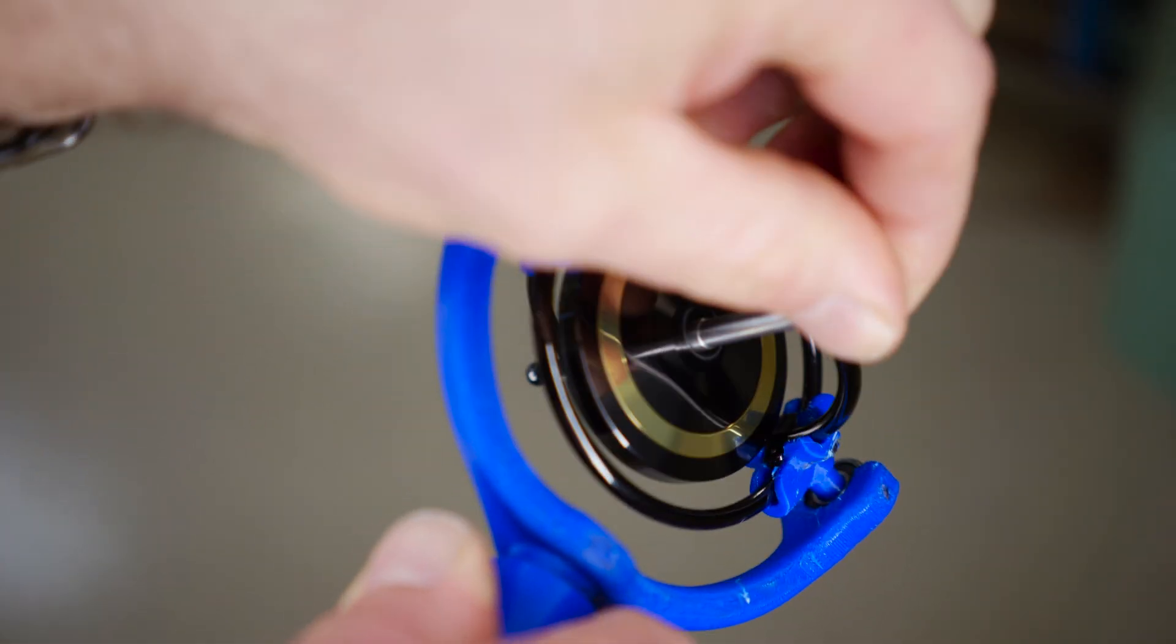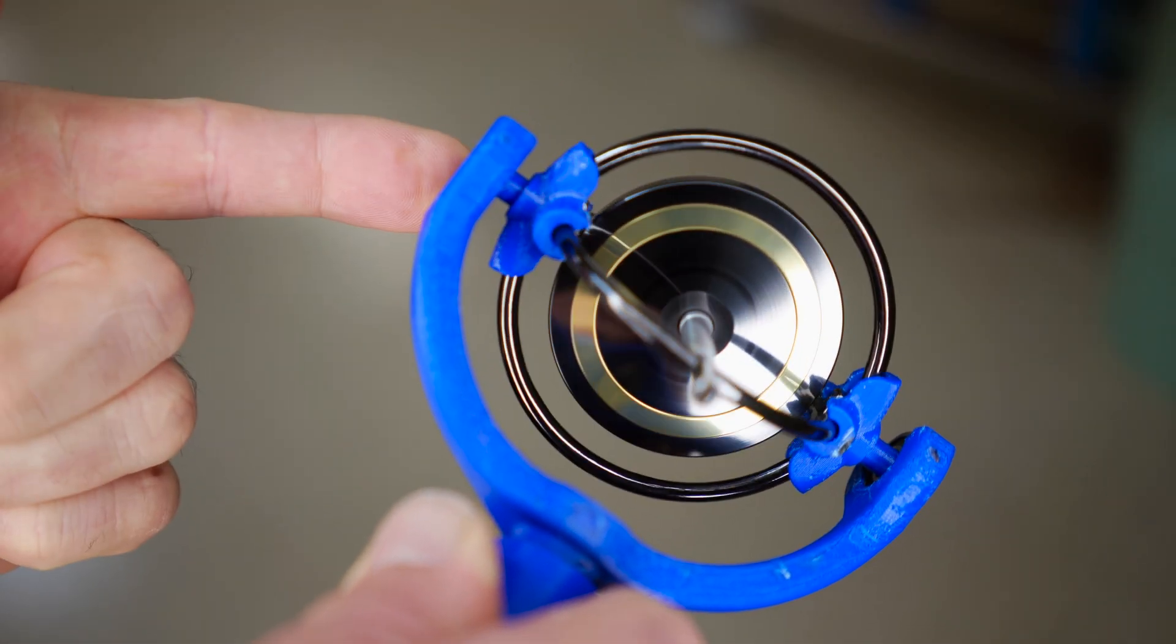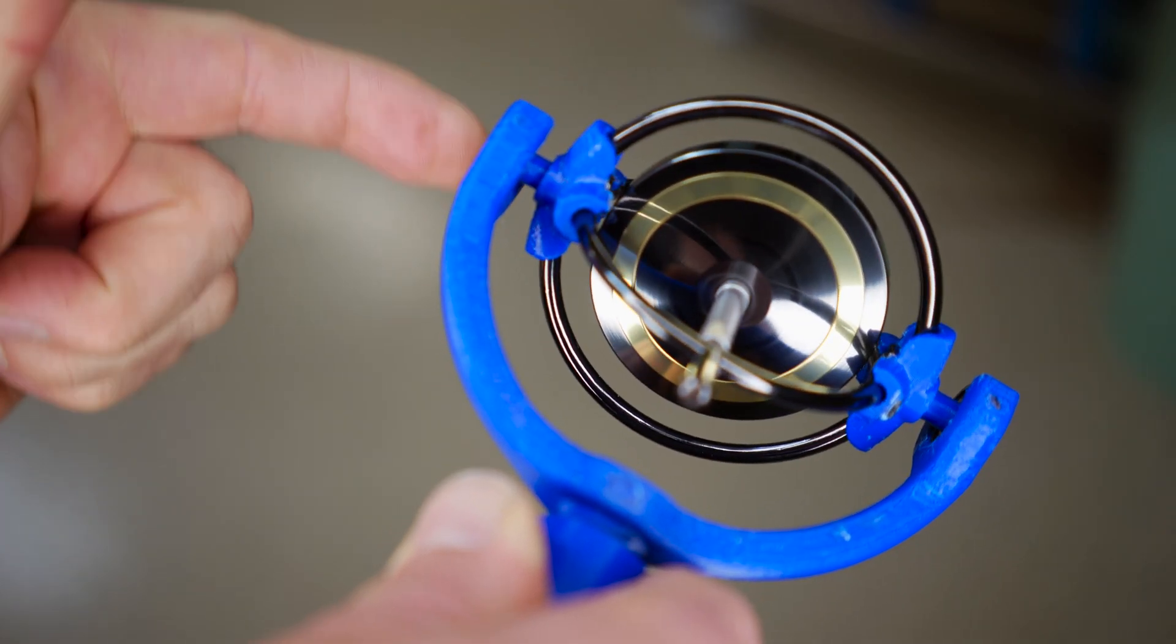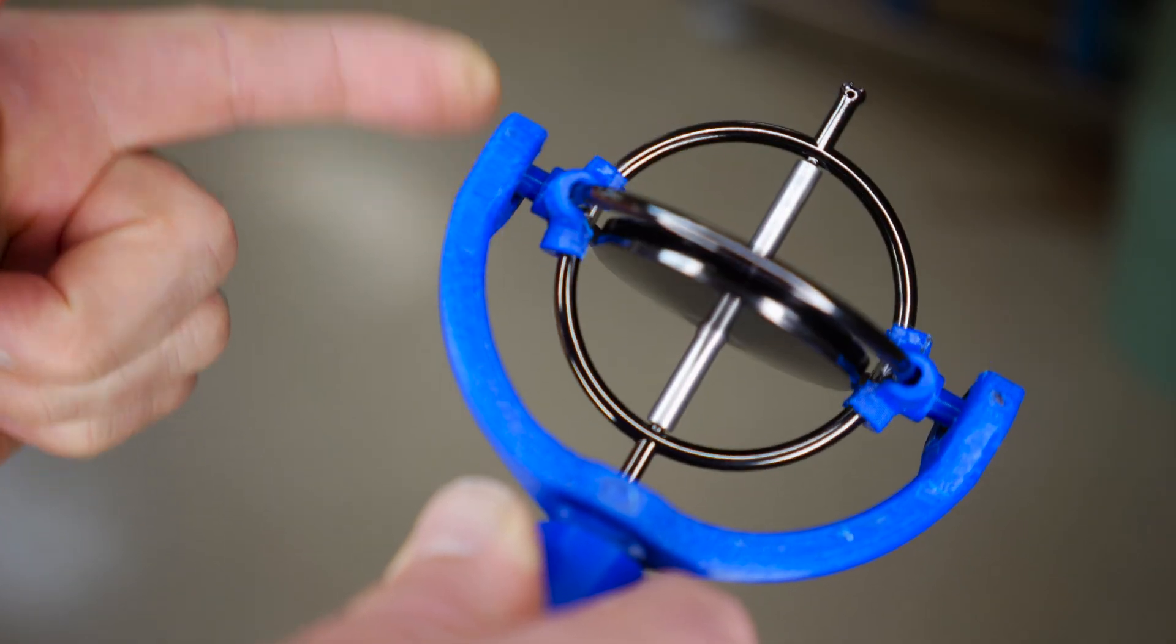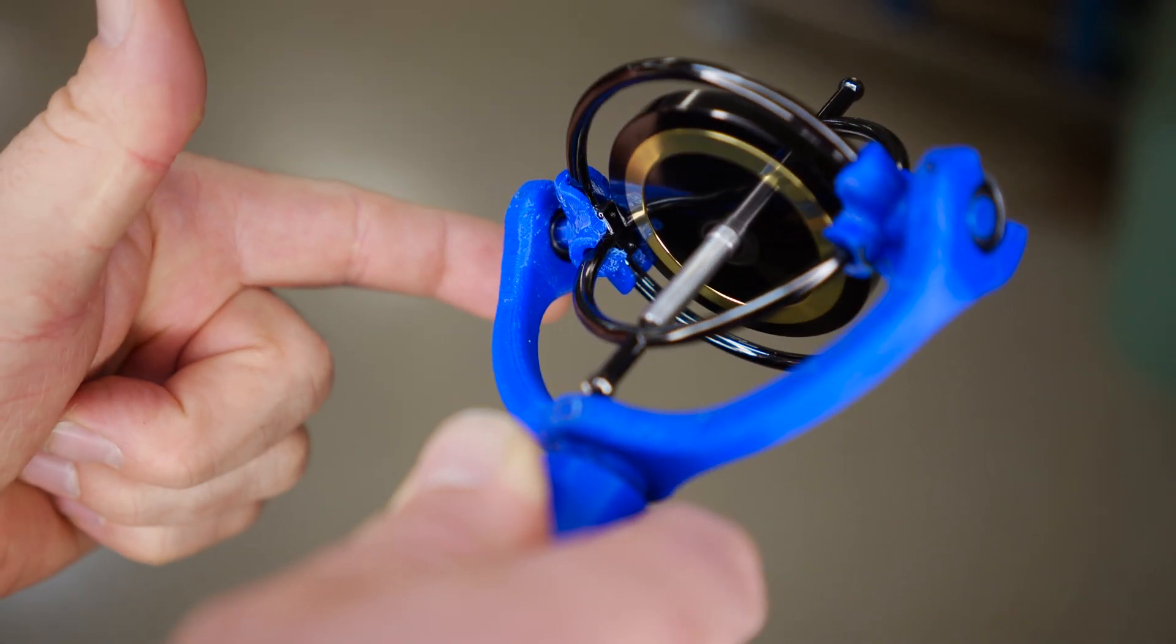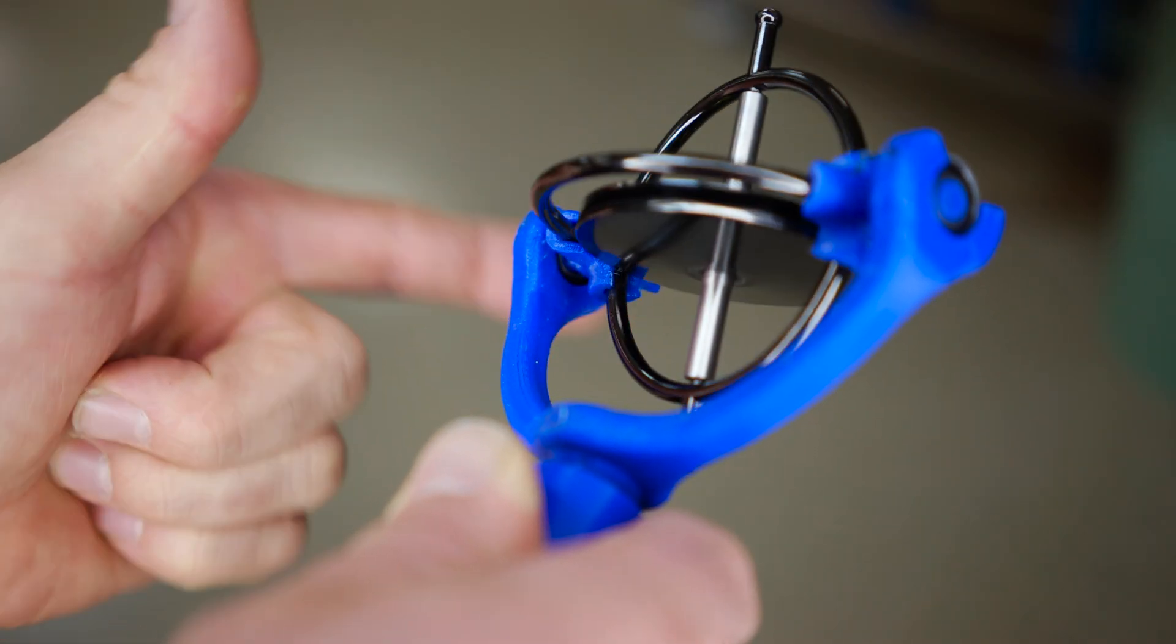Another principle is that of gyroscopic precession. Precession causes a gyroscope to respond to external torque by turning or precessing in a direction and on an axis that is perpendicular to the applied force.